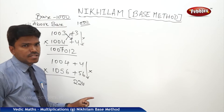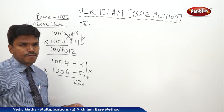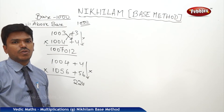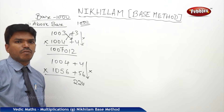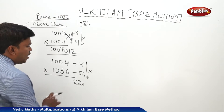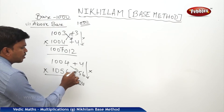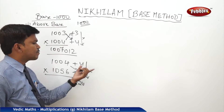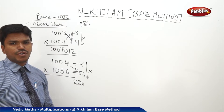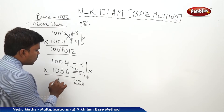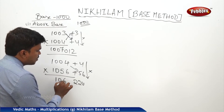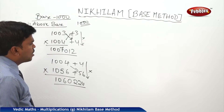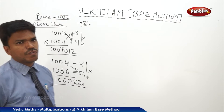Are the same number of digits? Yes, three digits are there — no problem with the right side part. Now cross addition: 1004 plus 56, or 1056 plus 4 — both give the same answer. How much? 1060. So my answer is 1060, 224.